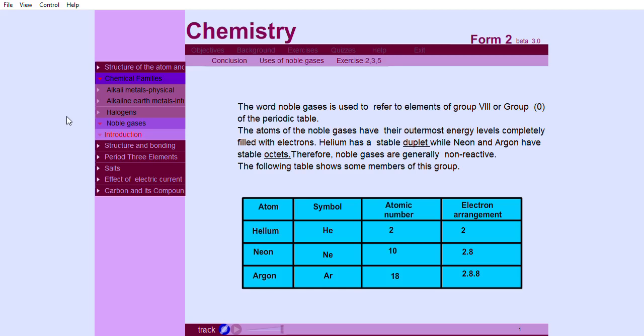The atoms of the noble gases have their outermost energy levels completely filled with electrons. Helium has a stable duplet while neon and argon have stable octets. Therefore, noble gases are generally non-reactive.